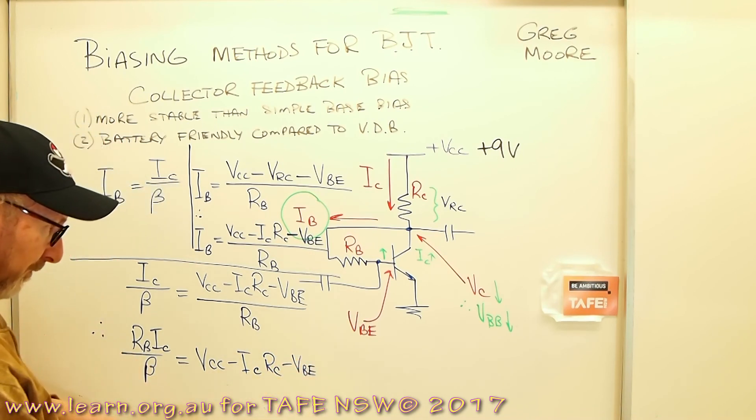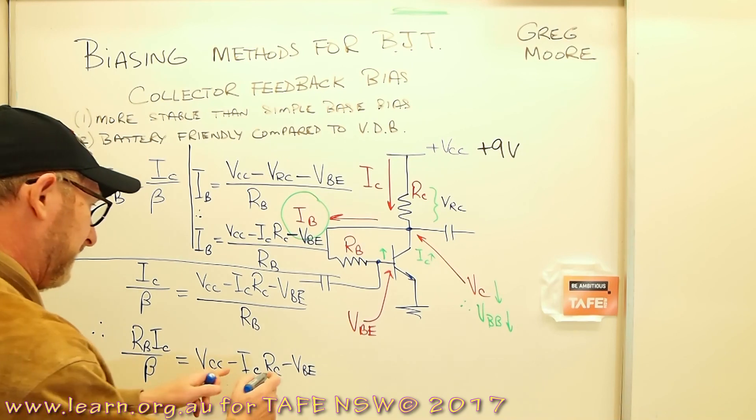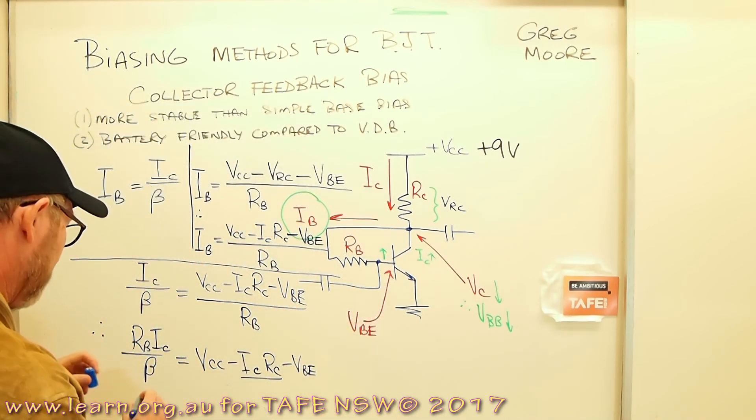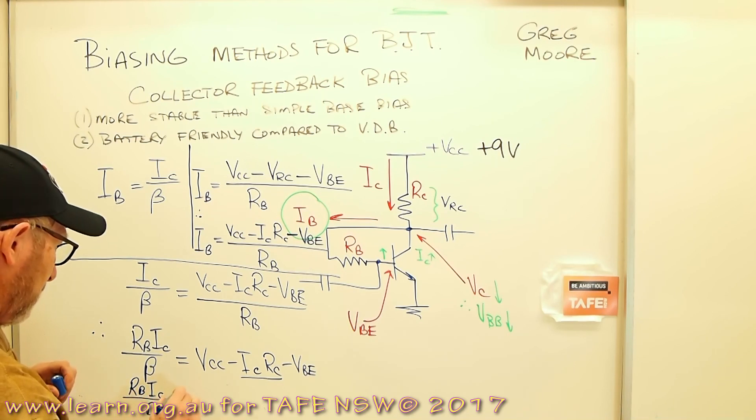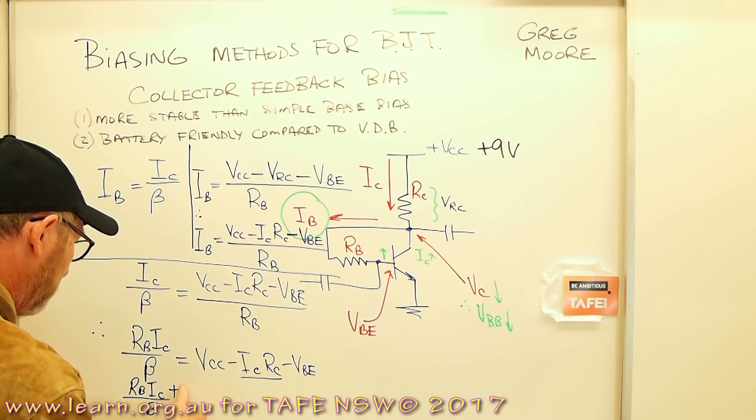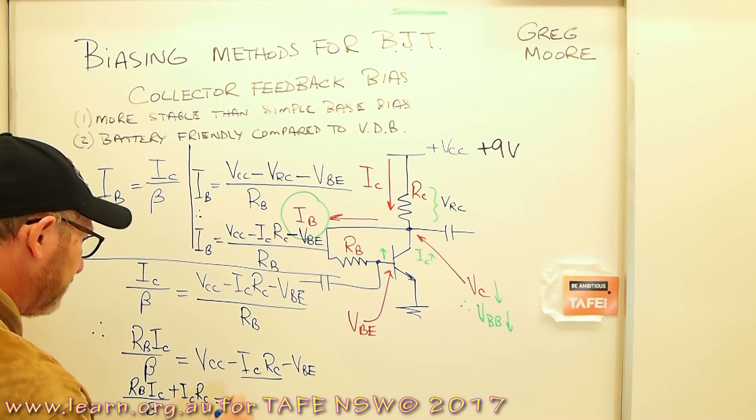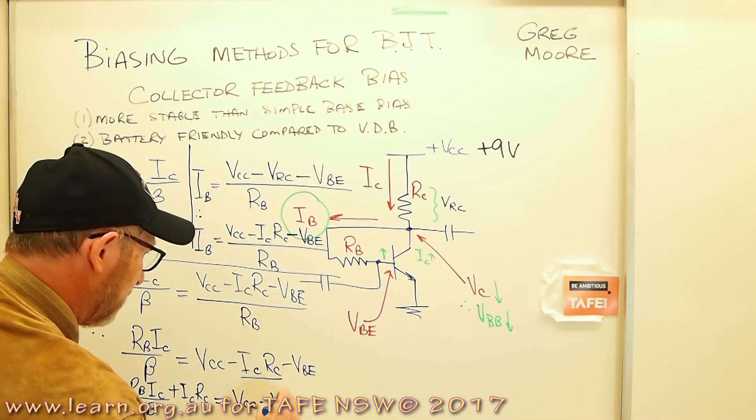I'm going to have to be careful where I'm going on the bottom of the board here. We can take this from one side of the equation and add it to the other side of the equation. So that would come down to being RB IC over beta. Add ICRC equals, this side of the equation is looking pretty good now. Looks a little bit lighter than it started anyway. VCC minus VBE. So if we concentrate now, I'm going to have to move myself across to this side of the board because it's kind of crammed in here, we've run out of space.